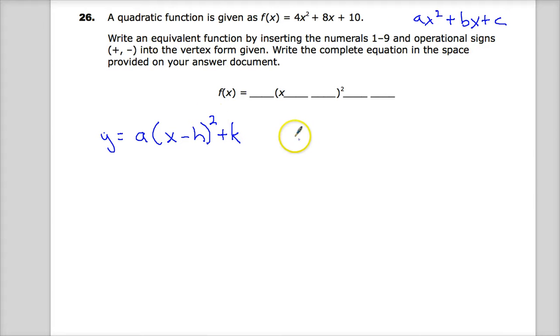So the value for a is the same. So 4 goes here and there. Now, the next thing we're going to do is find the points for h and k. And the h and k would be the vertex points.